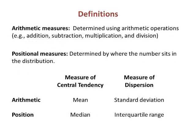Arithmetic measures are determined by using the basic arithmetic operations: addition, subtraction, multiplication, and division. Positional measures are determined by where the number sits in the distribution. Each type of measure has its own measure of central tendency and measure of dispersion.